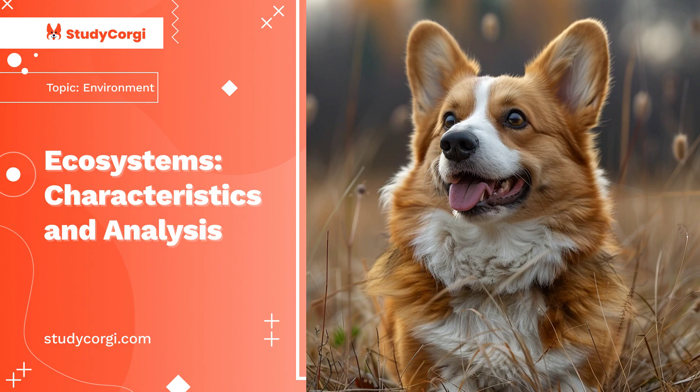An ecosystem that resides in a body of water is known as an aquatic ecosystem. The nature and characteristics of communities of living or biotic organisms and nonliving or abiotic factors that interact and interrelate with each other are determined by the aquatic environment on which they depend. An aquatic ecosystem can be broadly divided into a marine ecosystem and a freshwater ecosystem.